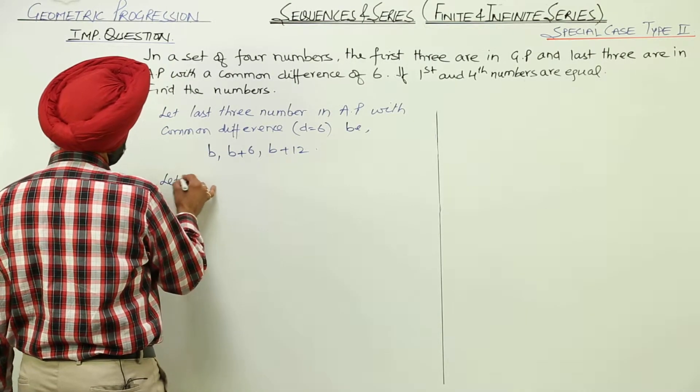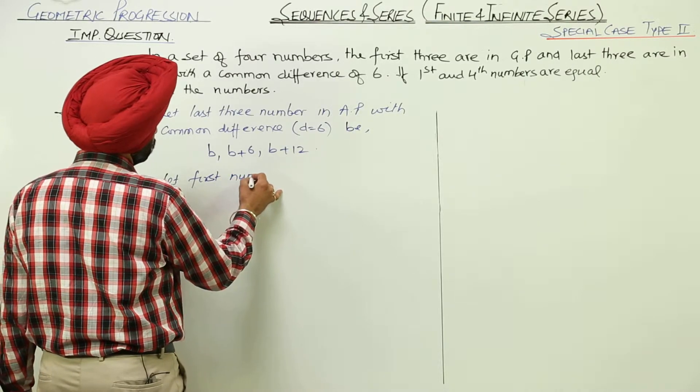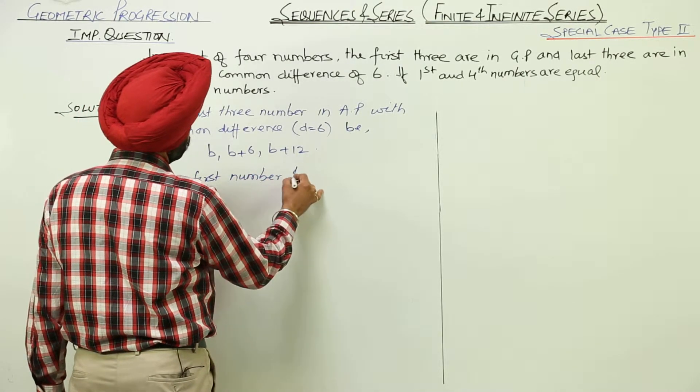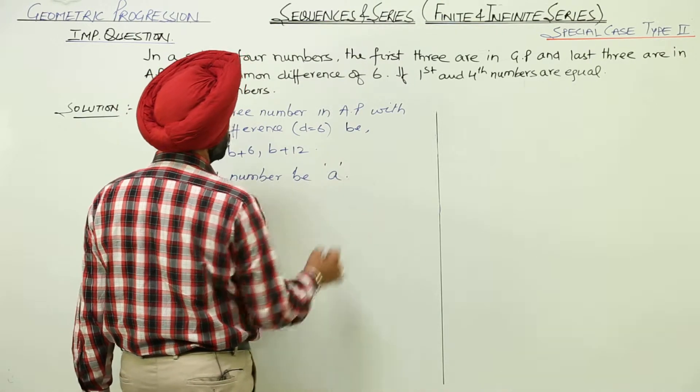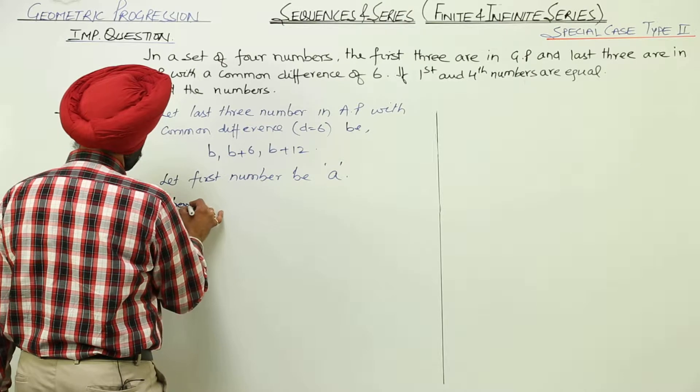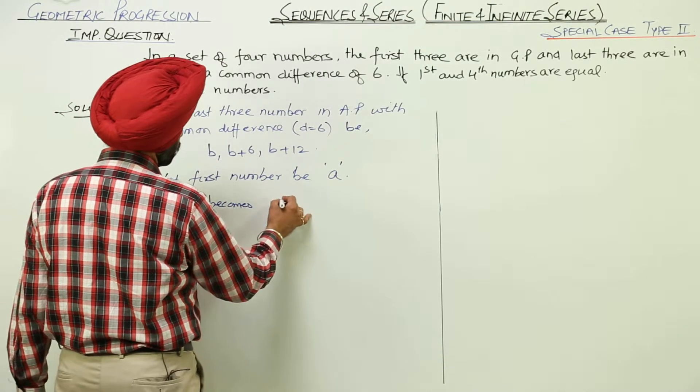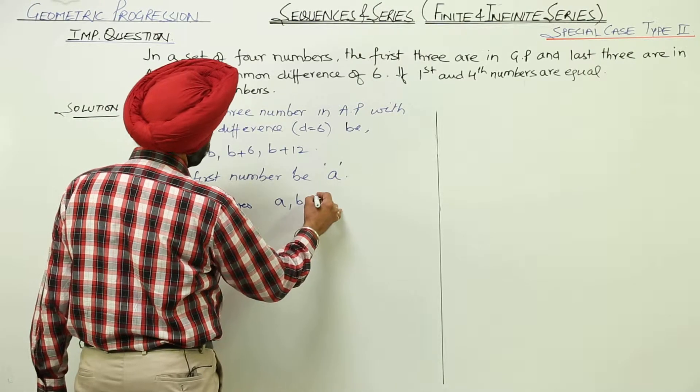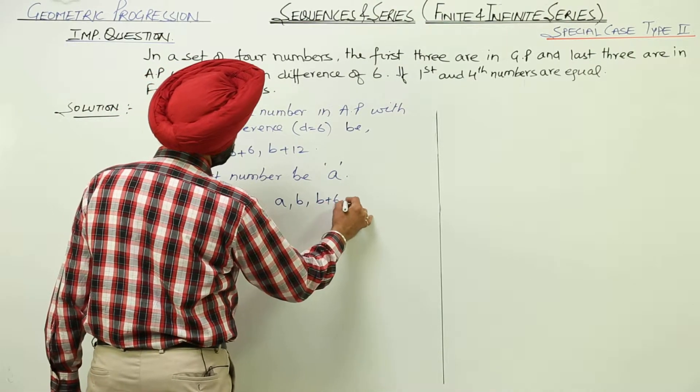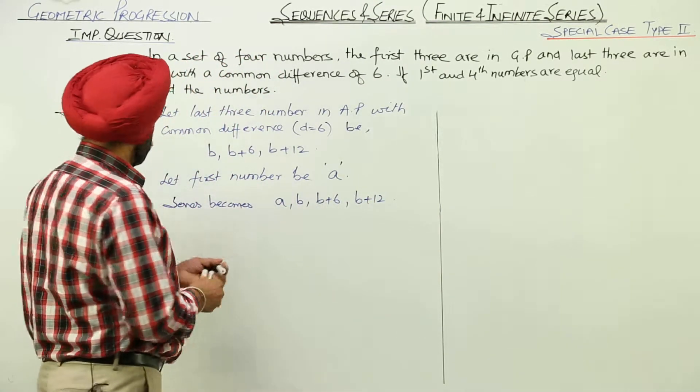Now, let first number be A. We are taking first number as A. Now, series becomes A, B, B plus 6 and B plus 12. Now this is the series.